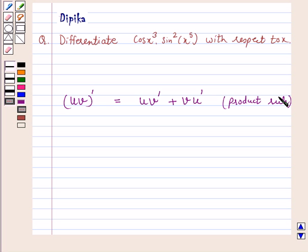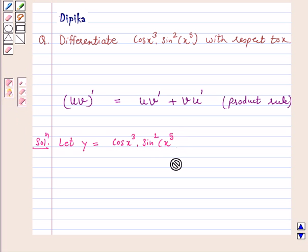This we will apply to differentiate the above function. So let's start the solution. Let y = cos(x³) · sin²(x⁵). Now here our u is cos(x³) and v is sin²(x⁵).